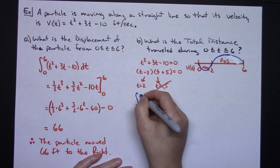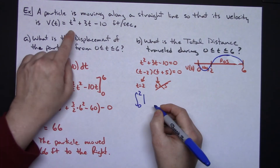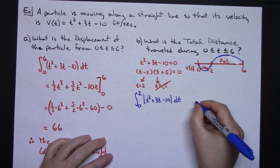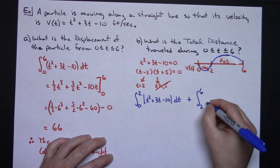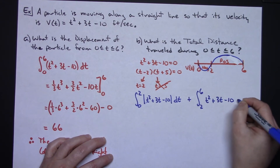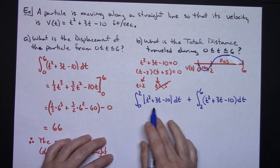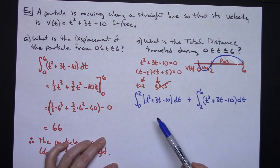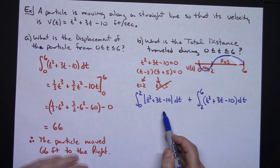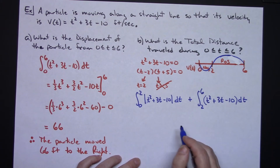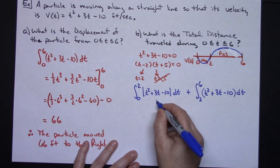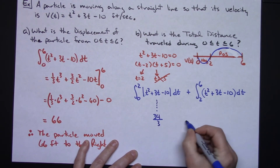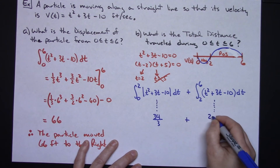So I integrate from 0 to 2 the absolute value of t squared plus 3t minus 10 dt, and add to that the integral from 2 to 6 of t squared plus 3t minus 10 dt. Because the section from 0 to 2 is negative, I need the absolute value to get a positive area so I'm adding up that total distance. Pause the video and try the integration yourself. I believe the first integral gives 34 over 3, and the second gives 232 over 3.